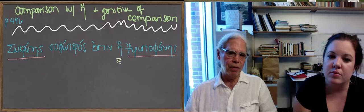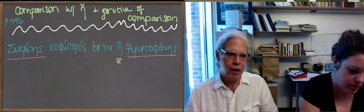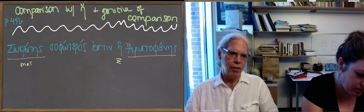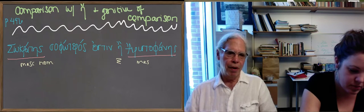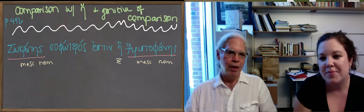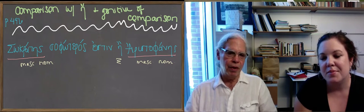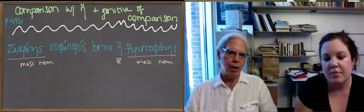And the next word is Aristophanes, the same gender, number, and case. Well, at least what's important is it's the same case as Socrates. Usually you don't compare things that are different in number. You don't compare one apple with a bunch of oranges, but anything is possible. But the important thing is not the number, but the case of the two nouns that are being compared.